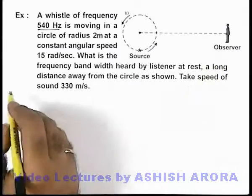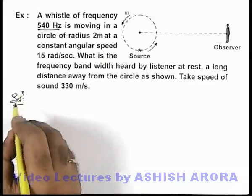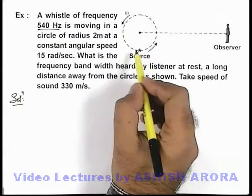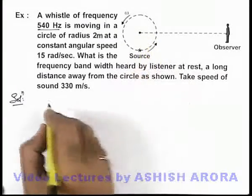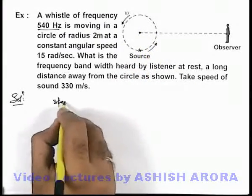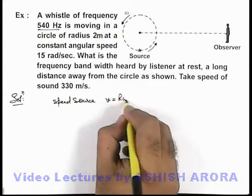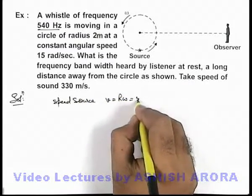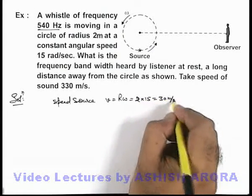We are required to take the speed of sound to be 330 m/s. In this situation, as the source is revolving in a circle of radius 2 meters, we can write the speed of source as v = rω, which will be 2 × 15 = 30 m/s.